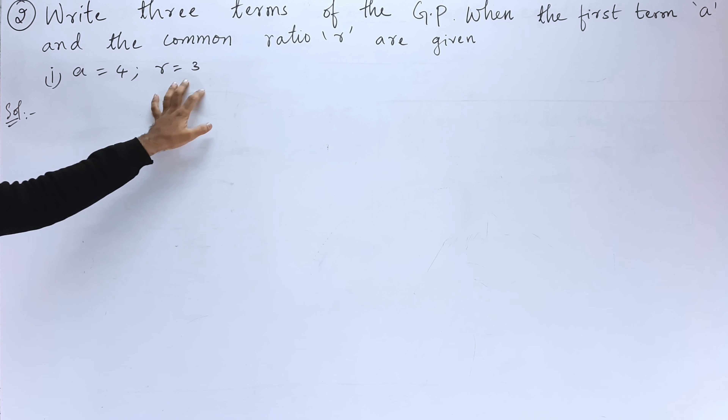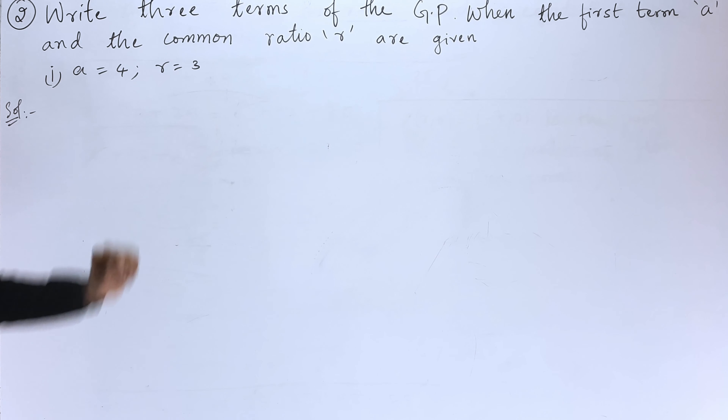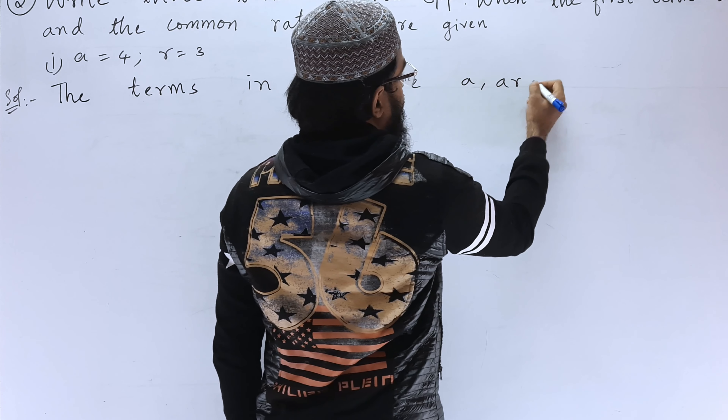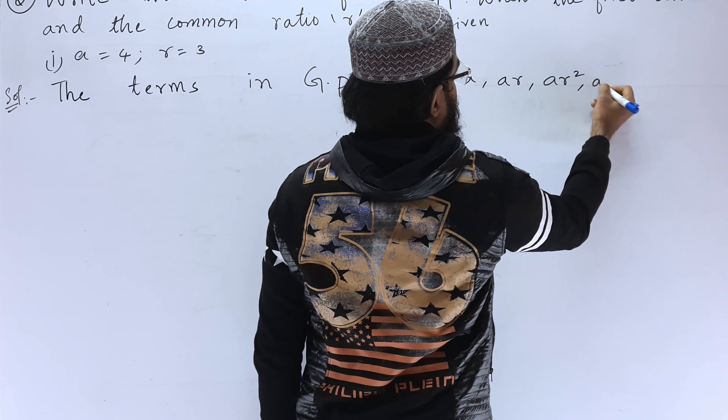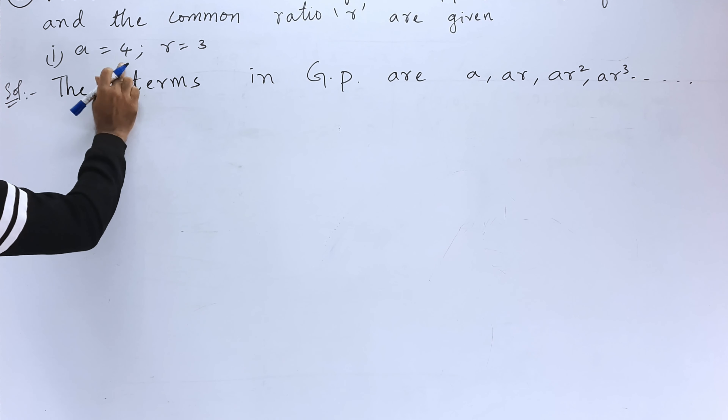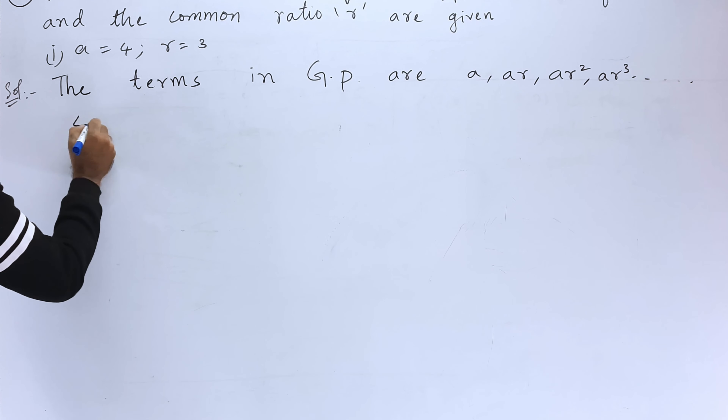Second problem: write three terms of the GP when the first term A and the common ratio R are given. They have given first term A equals 4 and common ratio R equals 3. We have to find the first three terms. The terms in a geometric progression are A, AR, AR², AR³, and so on.